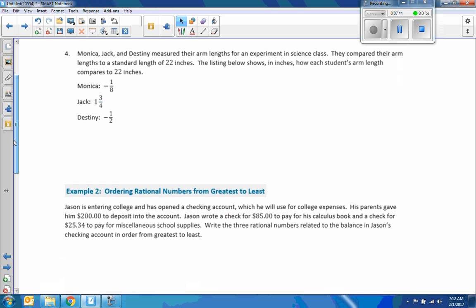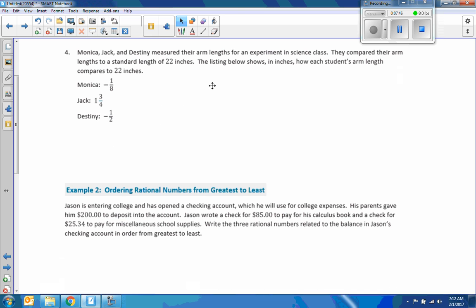Number four. Monica, Jack, and Destiny measured their arm lengths for an experiment in science class. They compared their arm lengths to a standard length of 22 inches. The listing below shows in inches how each student's arm length compared to the 22 inches. So Monica's was negative 1 and 1/8. Destiny's was negative 1.5, which means it was that much less than 22. So Destiny's was 21.5 inches long, and Monica's was 21 and 7/8 inches long. And then Jack's arm is longer. His is positive. It's greater than the 22. And his was 23 and 3/4 inches long.